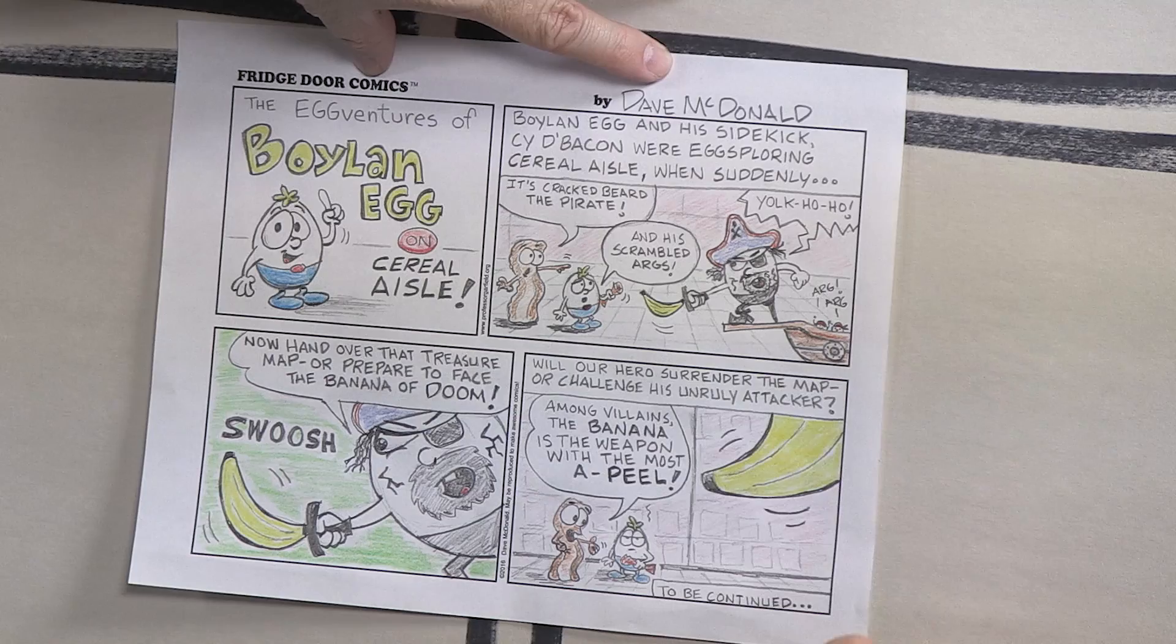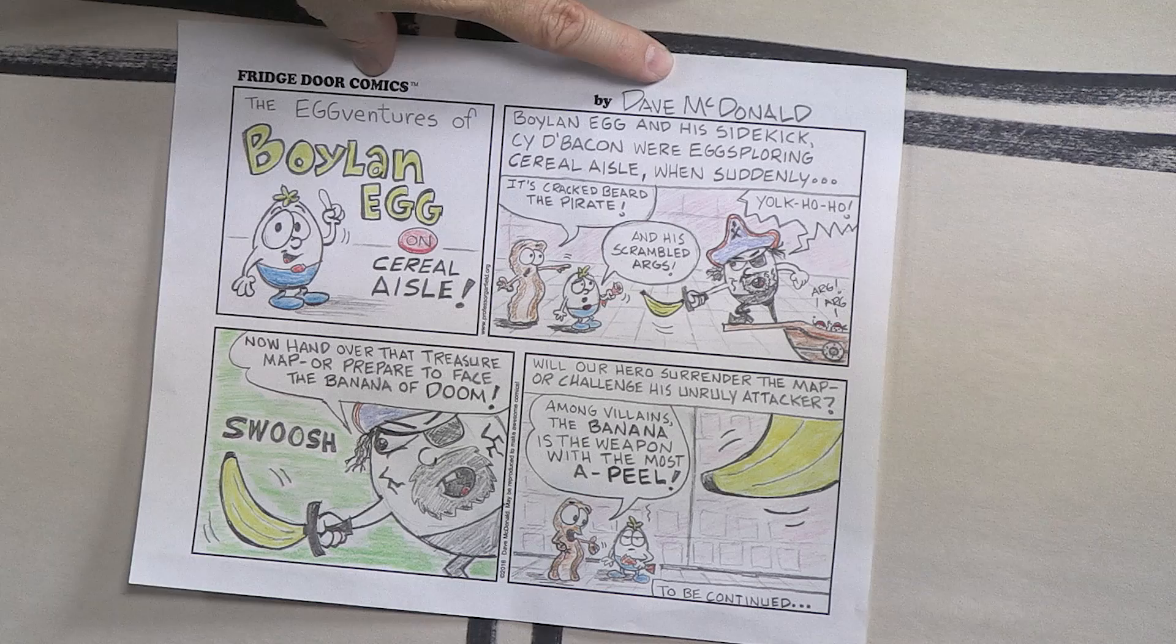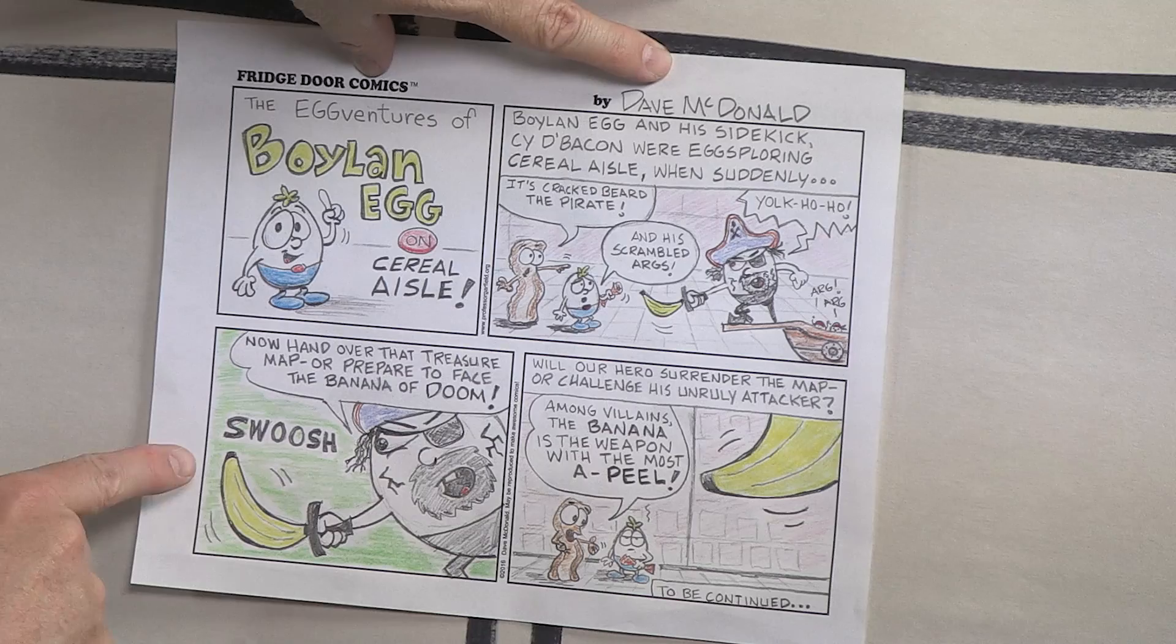Yolk, ho, ho. You can see the little guys down here, arg, arg, arg. Jump down here to panel number three. Now hand over that treasure map or prepare to face the banana of doom.